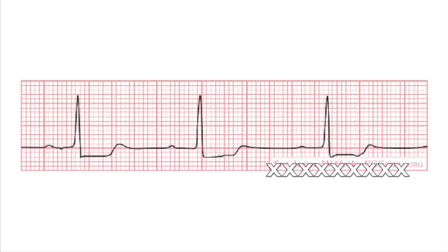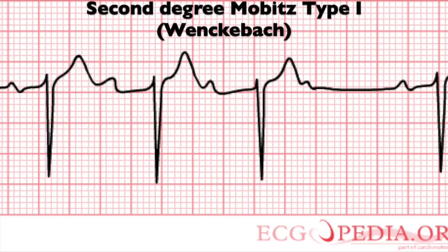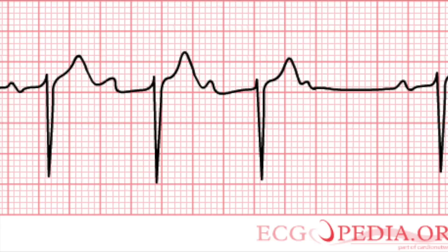This is the first degree AV block. You can tell because every QRS has a P associated — there are no dropped beats — but the PR interval is greater than one big box. This is the second degree Mobitz type 1, also called a Wenckebach rhythm. You can tell because the PR interval is slowly lengthening with every QRS, and then suddenly there's a dropped beat — kind of like it's winking at you and about to drop, aka Wenckebach.